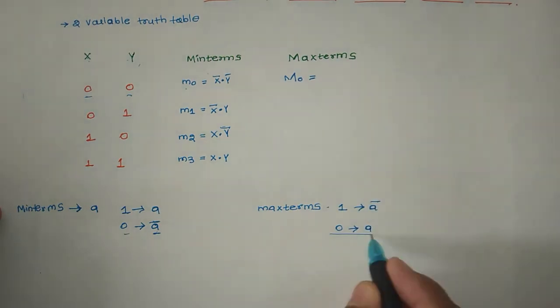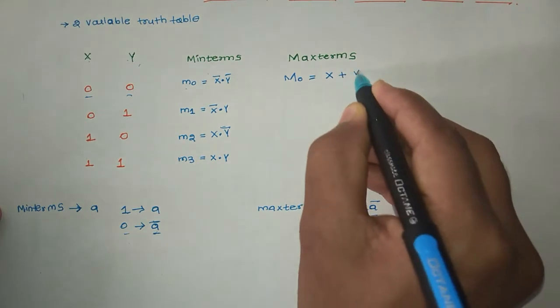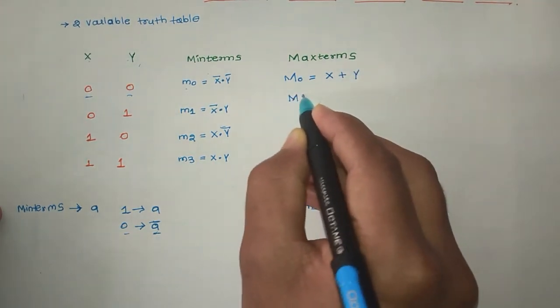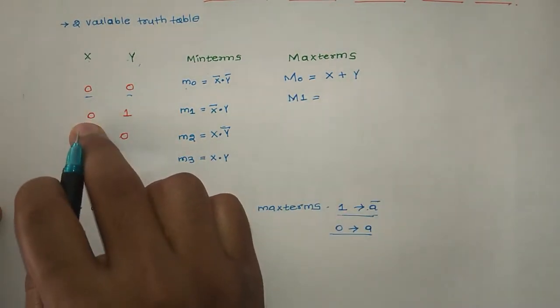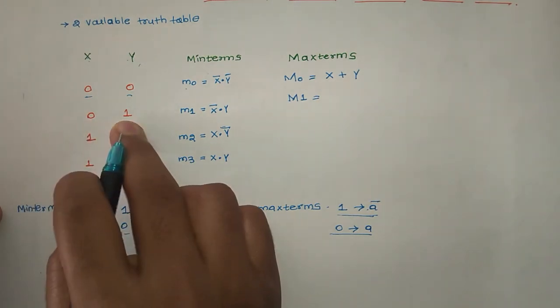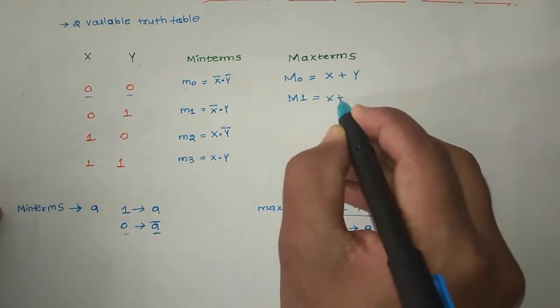So X plus Y. Next M1: X is 0, that means we have to write the original, and Y is complement. So X plus Y bar.